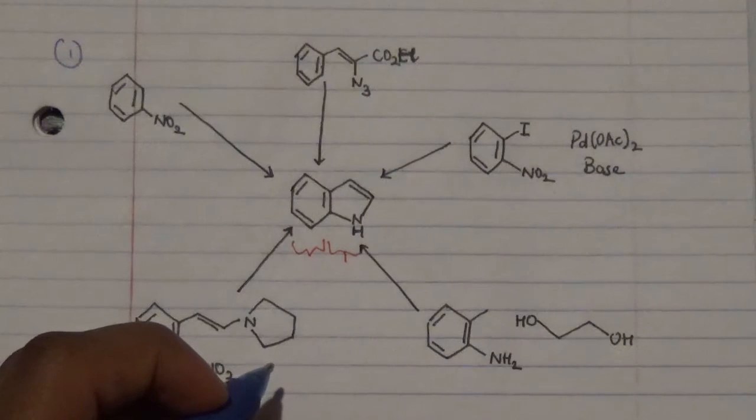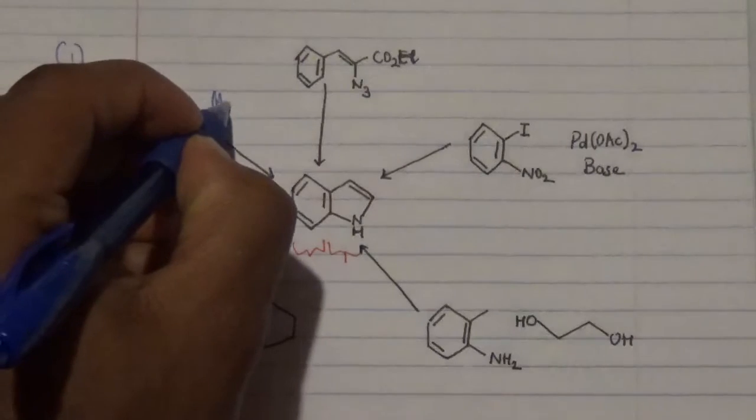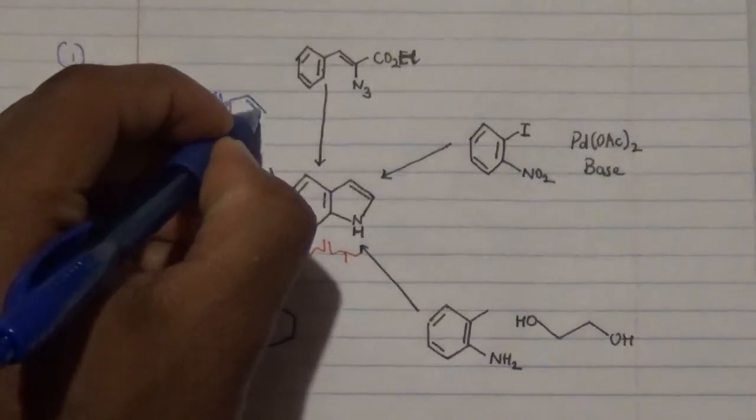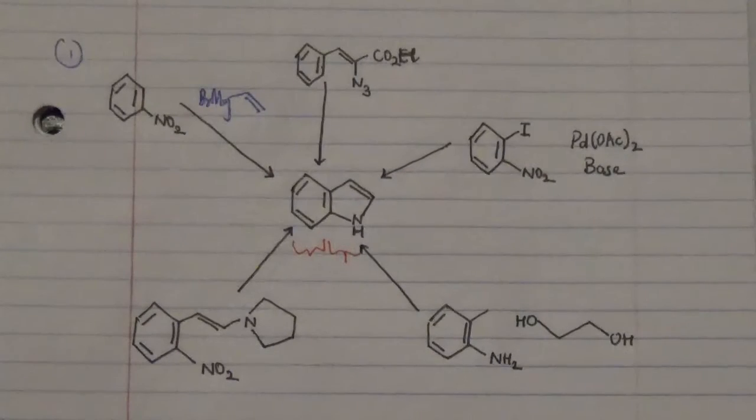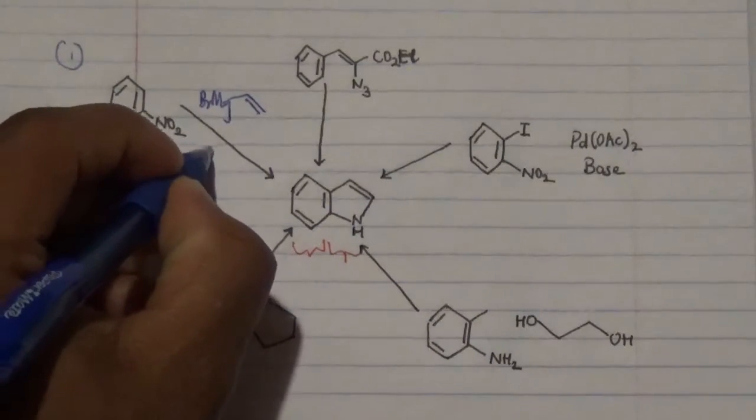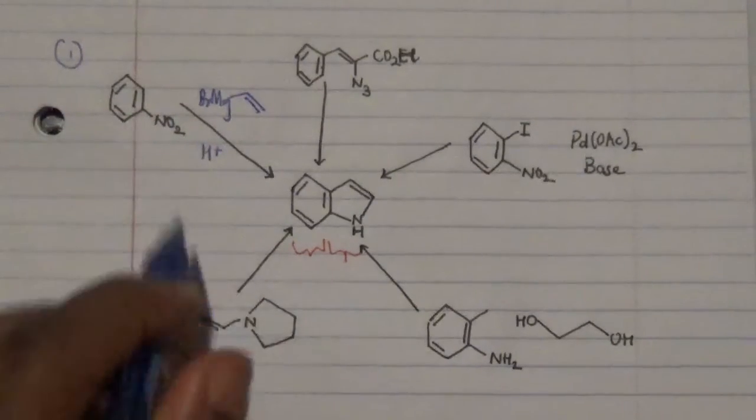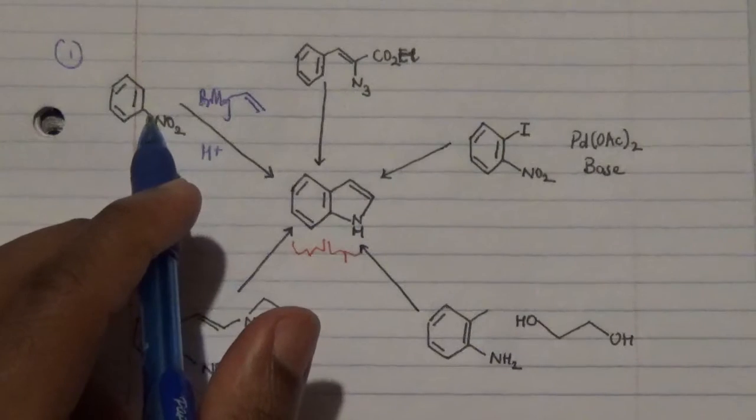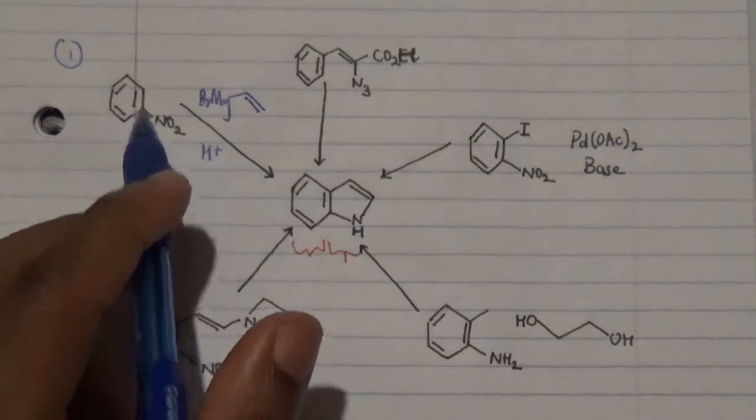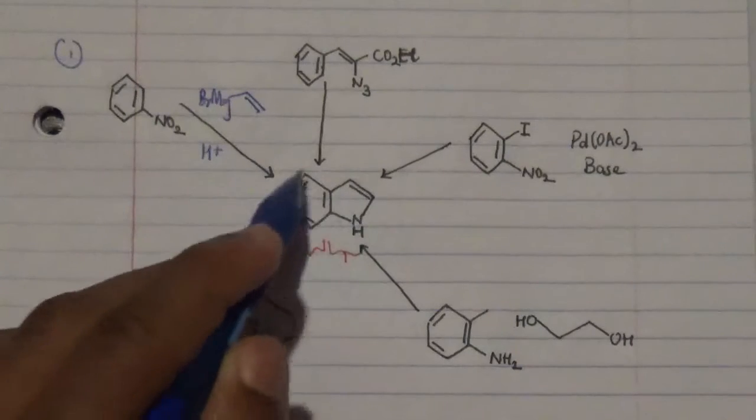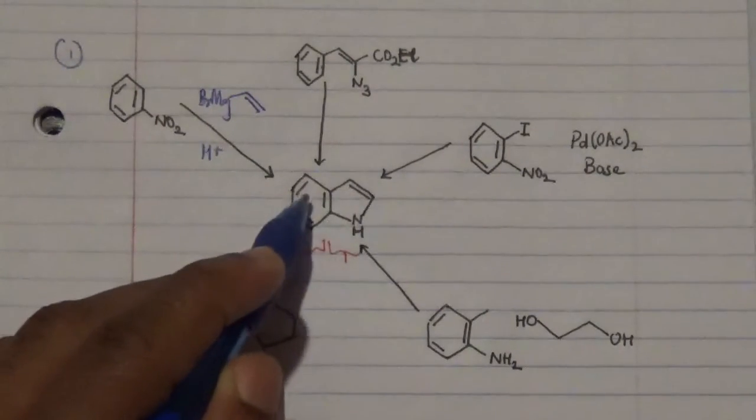One of this particular step, given as number one, is using a Grignard step. A Grignard step involves the introduction of magnesium bromide that is attached to a particular alkene group, and how this is going to be involved in the presence of an acid and react with this particular reagent, which is a nitro benzene, to generate this particular fused ring.